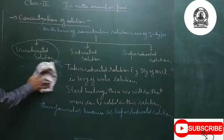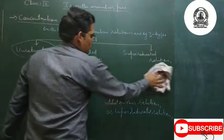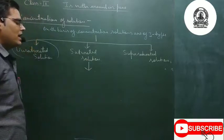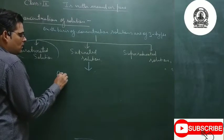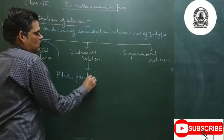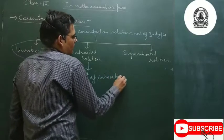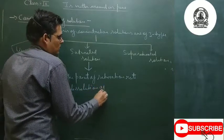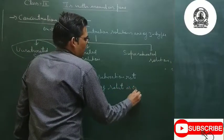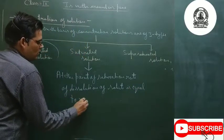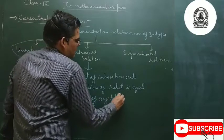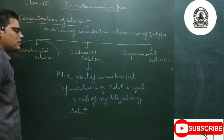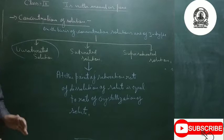One more important thing: if you see the saturated solution — when 36 grams of NaCl is dissolved in 100 grams of water and no more solute can be added — at this point of saturation, the rate of dissolution of solute is equal to the rate of crystallization of solute. These two rates are equal at the point of saturation.